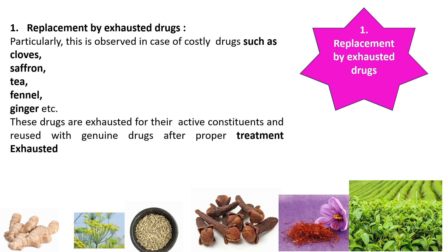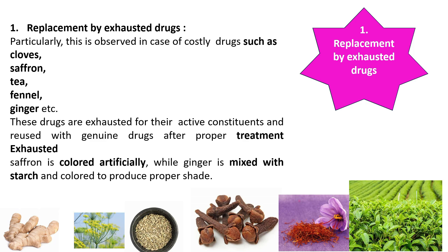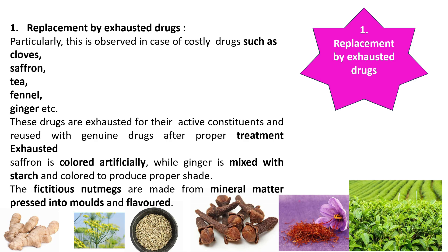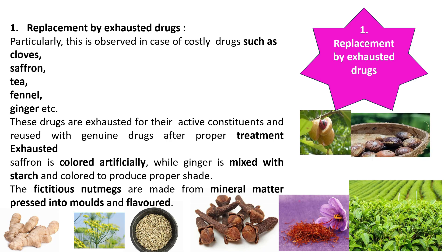Exhausted saffron is colored artificially after removal of its constituents, while ginger is mixed with starch and colored to produce a slight yellowish or grayish shade. Fictitious nutmegs are made from mineral matter pressed into molds in the shape of nutmeg, and a flavor is added. This is the nutmeg from which the volatile principle or active principle has been removed — exhausted.